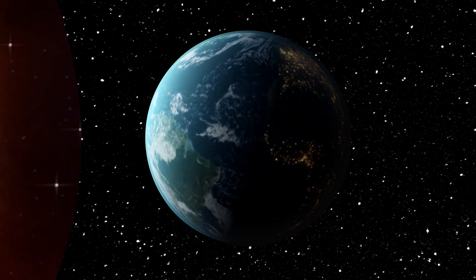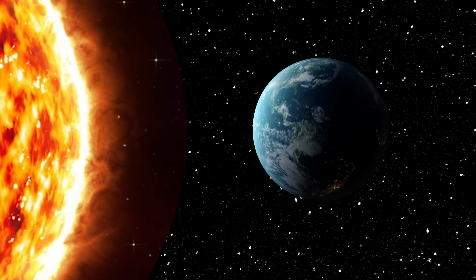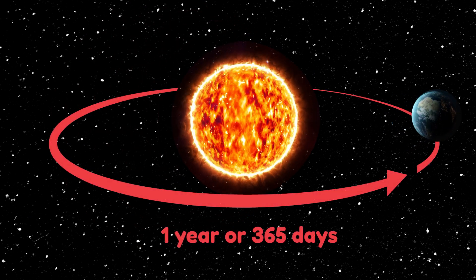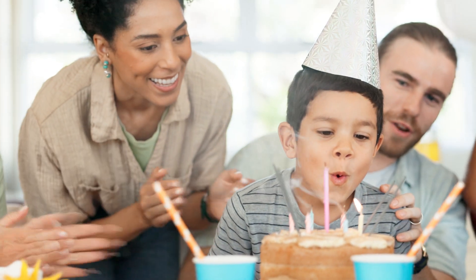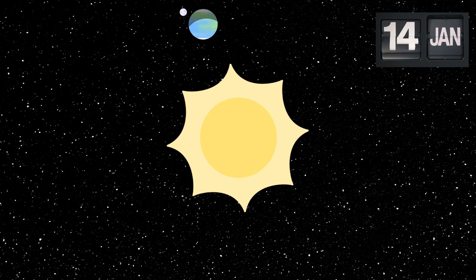The Earth doesn't just spin. It also goes around the sun, too. It takes one year, or 365 days, for the Earth to orbit the sun once. So every time you have a birthday, the Earth has done one lap of the sun.